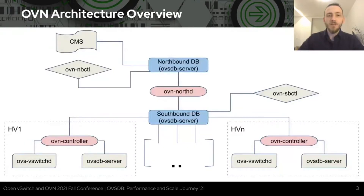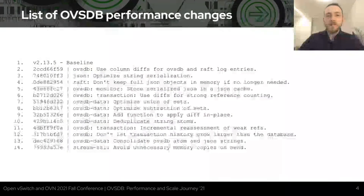Here is the OVN architecture overview. We have two main databases: northbound and southbound. Use cases for northbound and southbound databases are different. Northbound typically has a small number of clients but a higher rate of incoming transactions. Southbound has a lot of clients such as OVN controllers and it typically has to store more data. Here is a list of OVSDB performance related changes accepted during the last year, which I will try to cover.